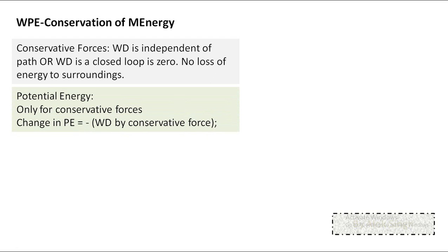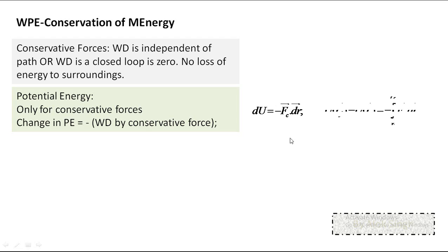Change in potential energy equals negative of work done by the conservative force. If we are comfortable with calculating work done, calculating change in potential energy is equally simple. We use U for potential energy, so dU equals negative of work done by the conservative force Fc. For larger displacement, we integrate this dot product from initial position Ri to final position Rf. This is the most general form, where displacement may have components in all three directions and the force may be variable.